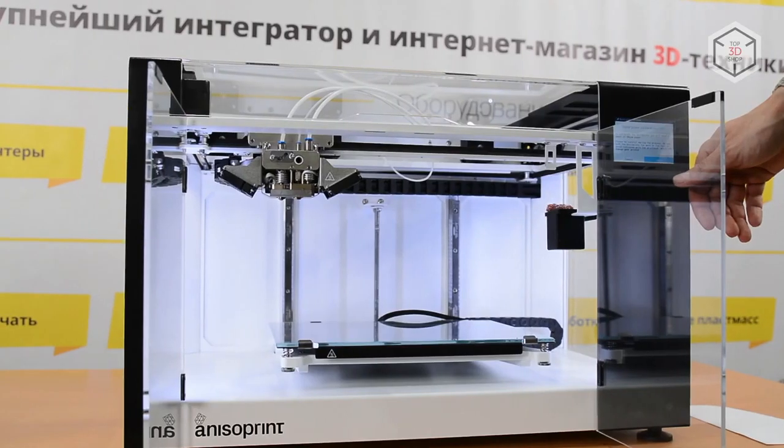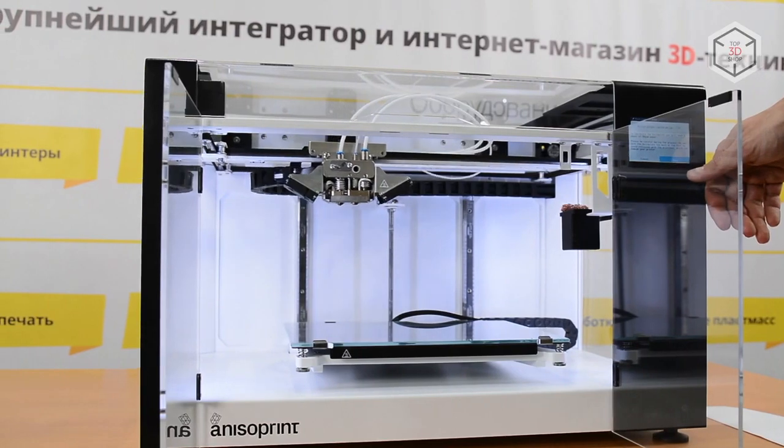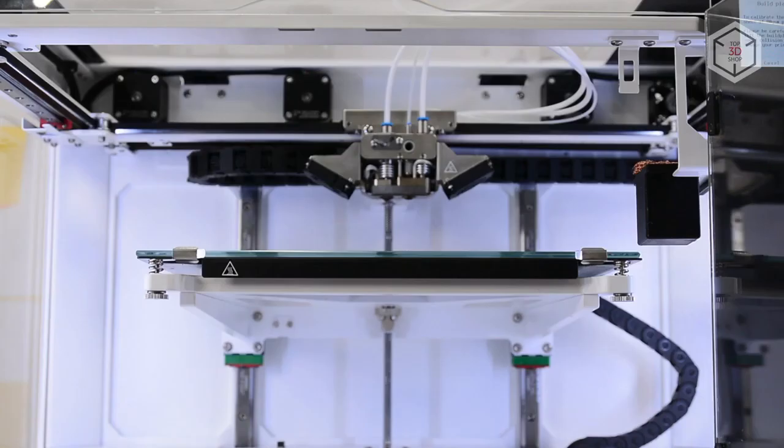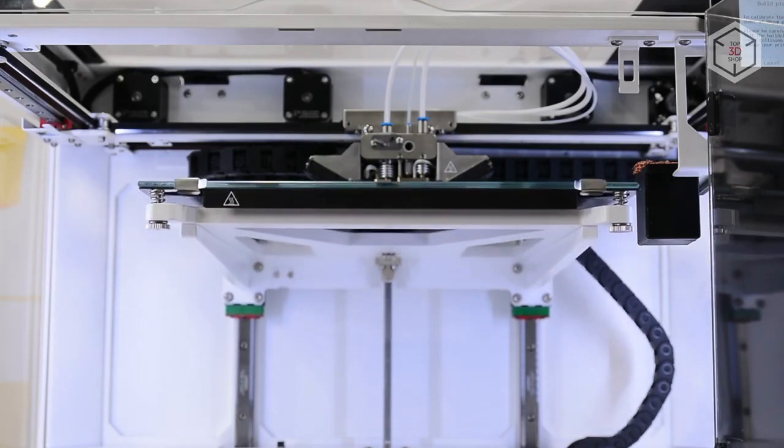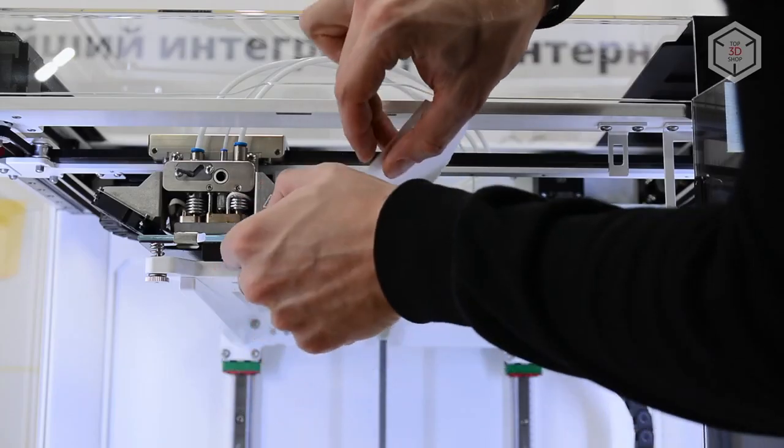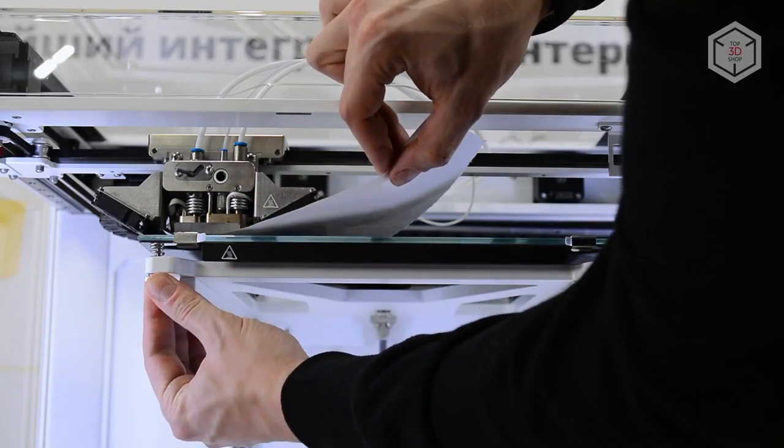The company's engineers introduced a completely new printhead. The 3D printer uses the Core XY design and is equipped with a heated bed featuring a removable glass surface. Leveling of the platform is carried out in semi-automatic mode, using the screws located under the bed.